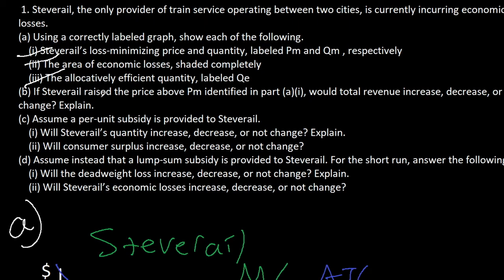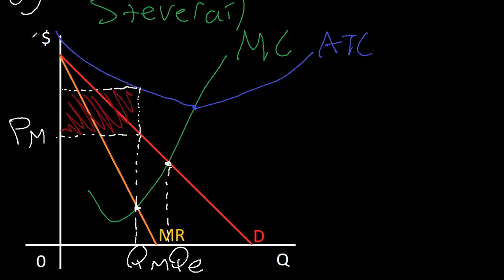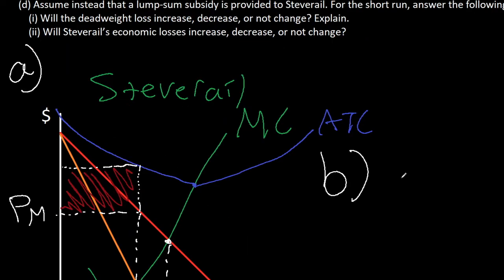Part B asks what happens if the monopoly raises the price above the loss minimizing price. Will total revenue increase, decrease, or change? We must remember that a monopoly will always operate in the elastic portion of the demand curve, where marginal revenue is positive. What do we know about elastic markets? By increasing price, you're decreasing total revenue. So if the monopoly raises its price, its total revenue will decrease. For part B, we'll just write decrease.